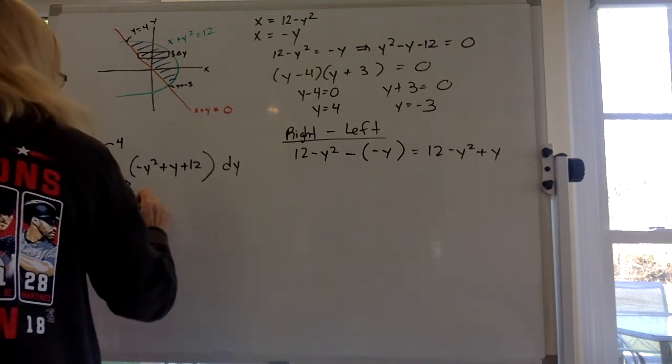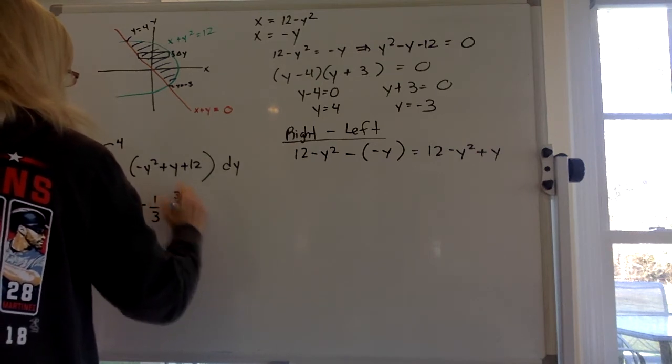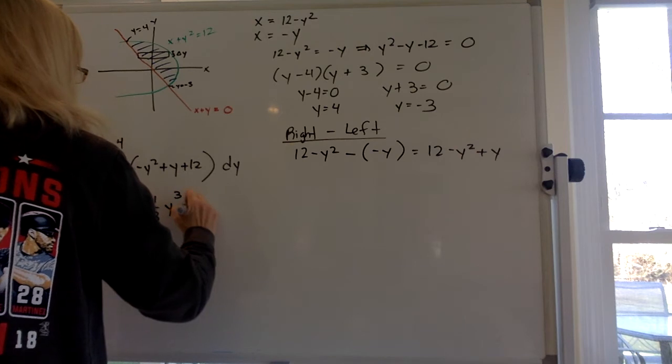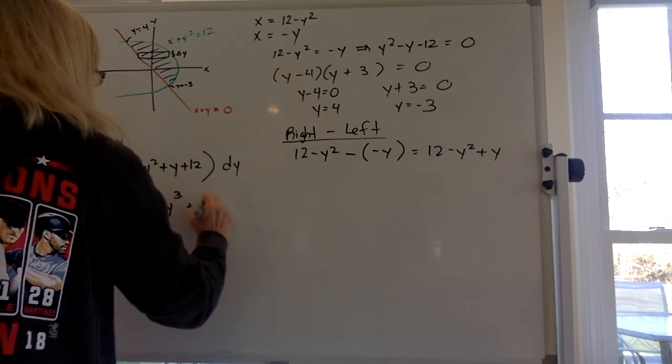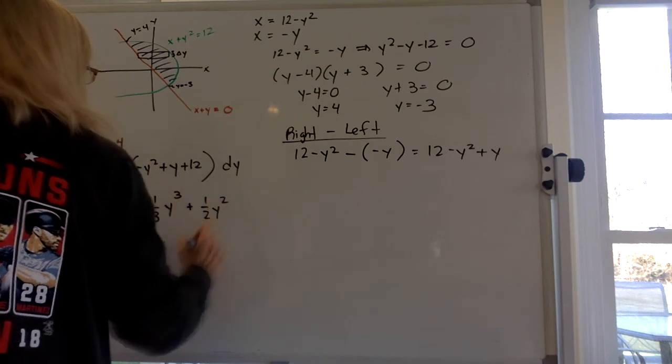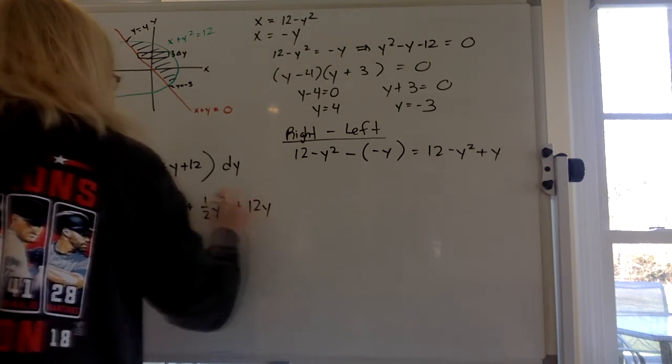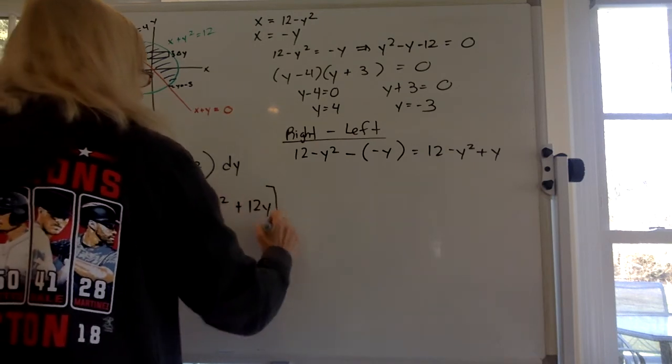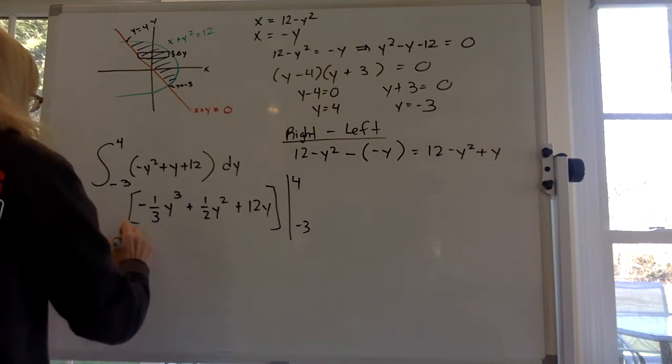So this isn't too bad. So let's see, minus 1 third, take the antiderivative of everything. Plus, what's the antiderivative of y? 12y, right? And they all go between 4 and negative 3. Okay, so now we just got to plug in.